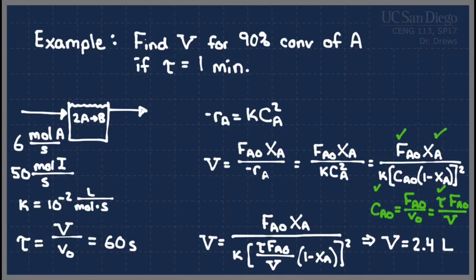You get very interesting behavior with CSTRs that you don't get in any other reactor. Because these don't involve differential equations, we can plot them without solving a differential equation. We'll introduce the equations for what are called multiple steady states — which can't happen in a plug flow or packed bed reactor, but in a CSTR you can have essentially multiple solutions to the problem. The reactor can run at multiple different steady states depending on how you start it, and if it's running you can force it to shift to another steady state.